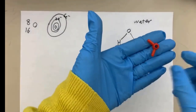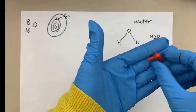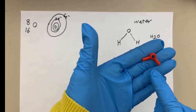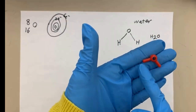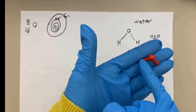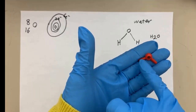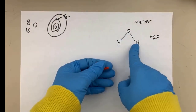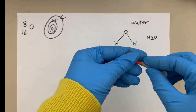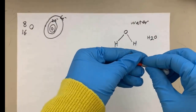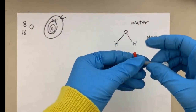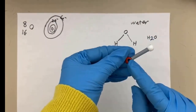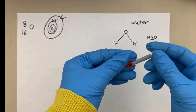The red block with two bonding arms represents the oxygen atom. Because we're making a bond between oxygen and hydrogen, I use the plastic bond to make the first covalent bond here between oxygen and hydrogen.